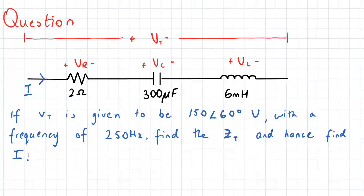So here is our question. We have a very simple circuit configuration with three impedances: one resistor of 2 ohms, one capacitor of 300 mF capacitance, and one inductor of 6 mH inductance.